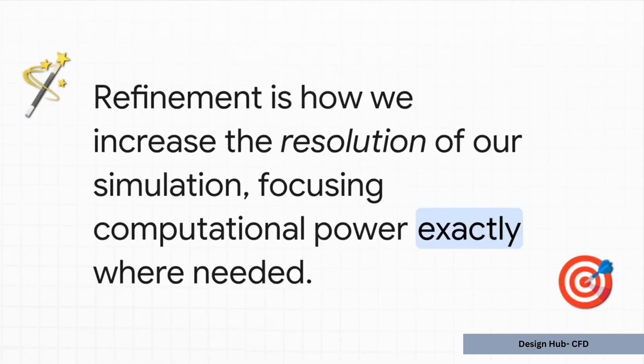So how do we get those crucial partial cells right, especially when you've got tricky curves or sharp corners? Well, the answer is a process called refinement. This is the magic trick we use to increase the resolution of our simulation, telling the software, hey, focus your power right here. This is the important spot.